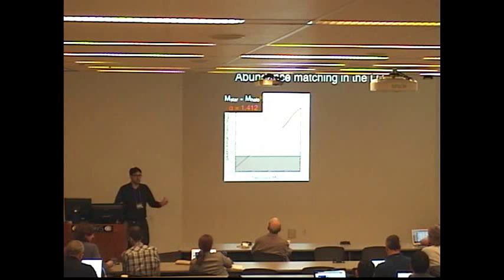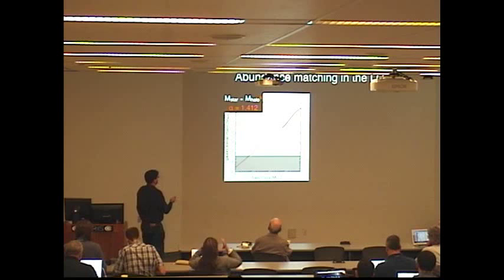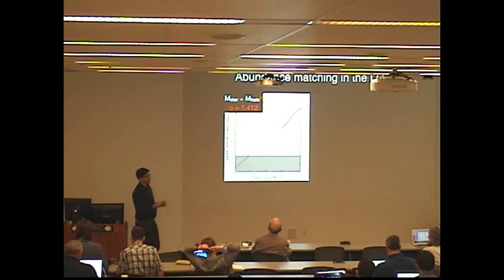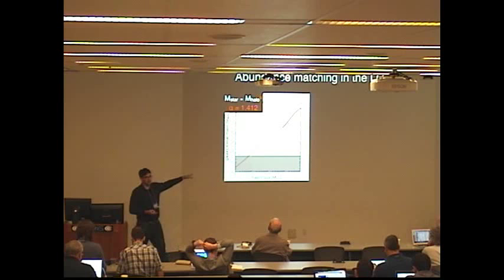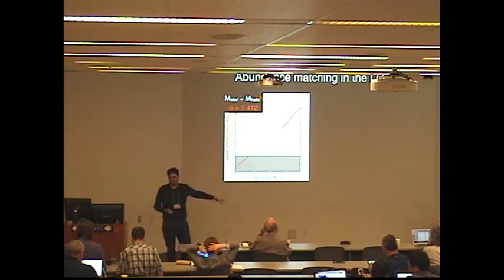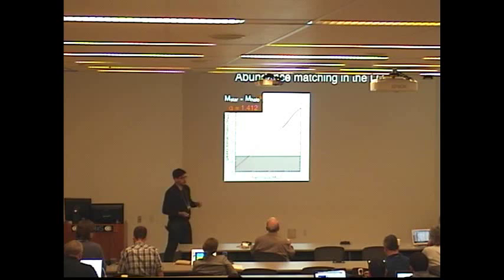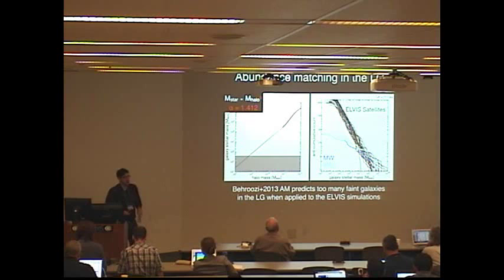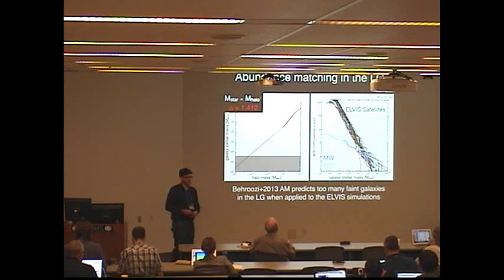Let me start by taking a step back and show you how we've used the local group to inform abundance matching estimates in the past. Here I'm plotting Peter Beruzzi's 2013 abundance matching line, which uses a faint end log slope of about 1.4. If we take this relationship and extrapolate it well below where Peter's data runs out to the ELVIS simulations, which are a suite of local group-like simulations with Milky Way mass hosts, then we get stellar mass functions that drastically over-predict the local group stellar mass functions, even in the region where we think we're complete around the Milky Way and M31.